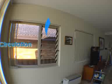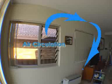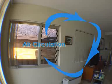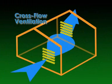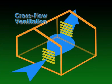Louvre windows are ideal for passive cooling. Air is circulated around the room and then out. Cross-flow ventilation is the best way to maximise the benefit of louvre windows.